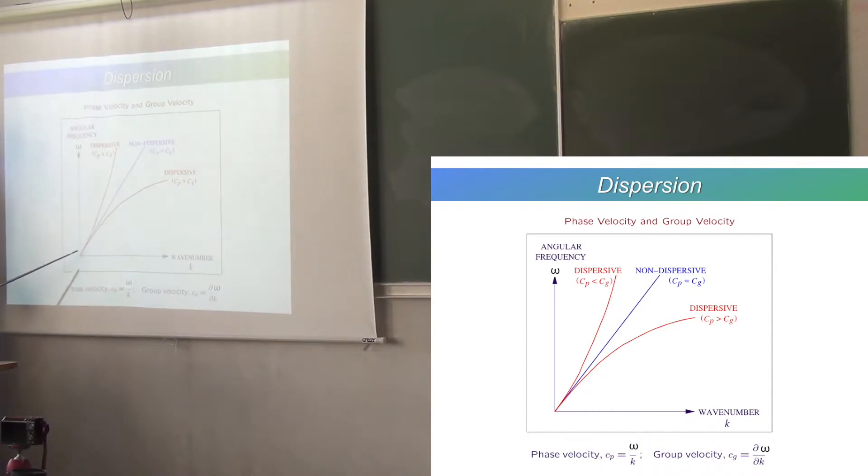So, the slope of this curve is constant. And if you divide omega by k, you'll always get the same value, and it'll be equal to the slope of this curve, which is also equal to the group speed. d omega by dk is the slope of this curve. If you have a dispersive wave, well, let's do that on the blackboard.